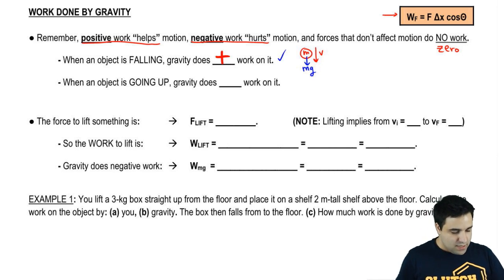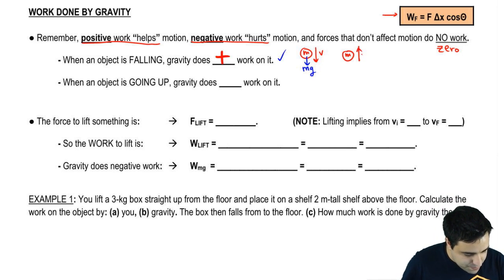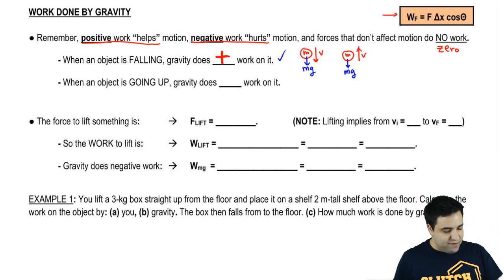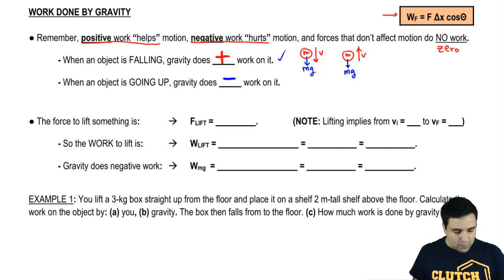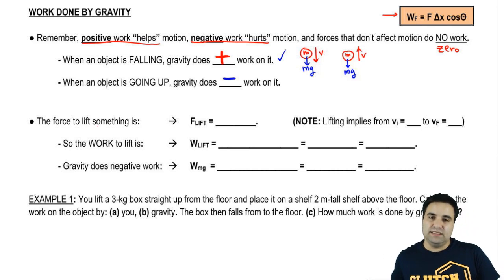Now, if an object is going up, gravity is pulling against it, and gravity does negative work on it. It's that simple. Let's talk about one more thing. What about if you're lifting something?